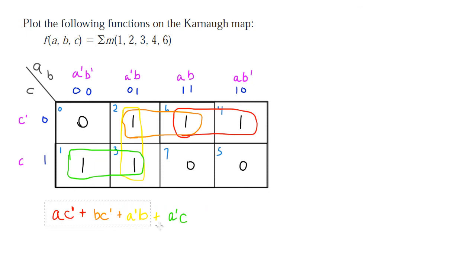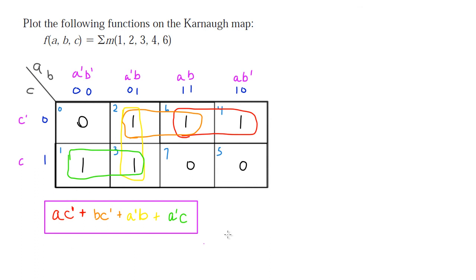And this final expression — no matter how hard you try, you cannot simplify the Boolean expression any further. That is your final answer in sum of products form. According to the rules of K-maps and any other simplification rule — Boolean algebra or otherwise — the Quine-McCluskey method won't even give you a simpler answer than that.